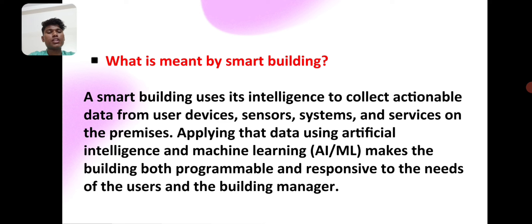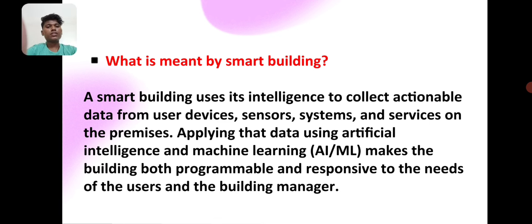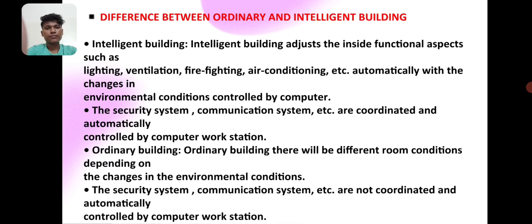What is the main best part of a smart building? A smart building uses its intelligence to collect actionable data from user devices and the systems and services on the premises. Applying this data using artificial intelligence and machine learning makes the building both programmable and responsive to the needs of the users and the building manager.